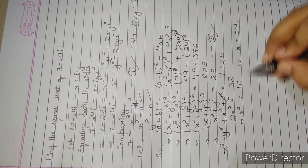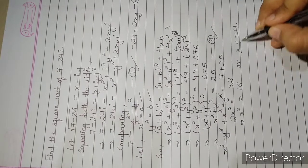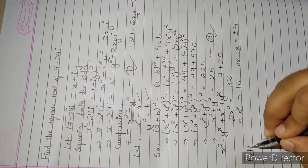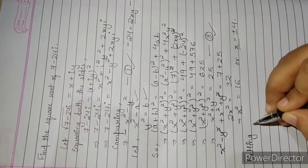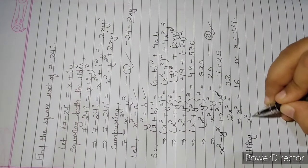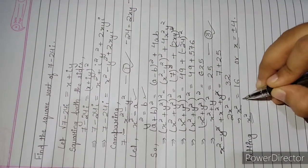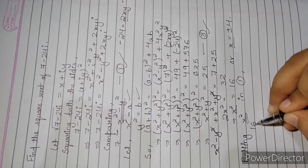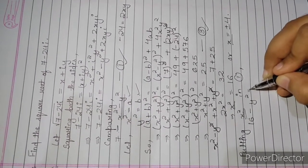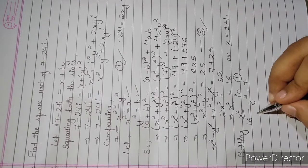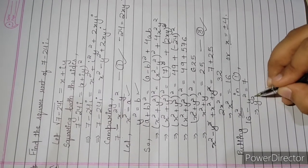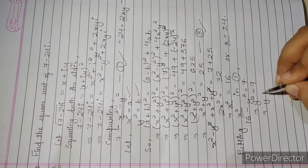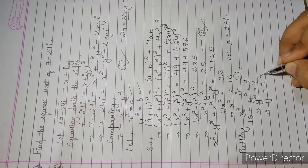Now, putting the value of x squared into equation 1: 16 minus y squared equals 7, so y squared equals 9, meaning y equals plus or minus 3.